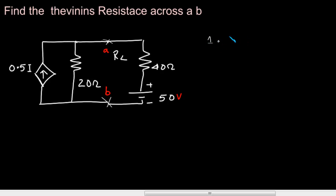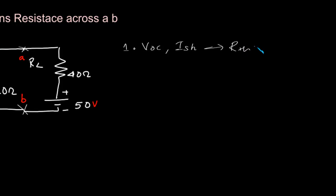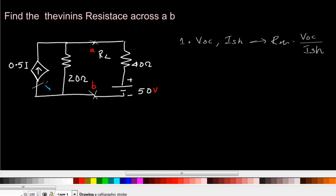One by finding out what is the open circuit voltage across the terminals and what is the short circuit current through it, and then find out R Thevenin as open circuit voltage by short circuit current. This is one method when we have dependent sources in the circuit.